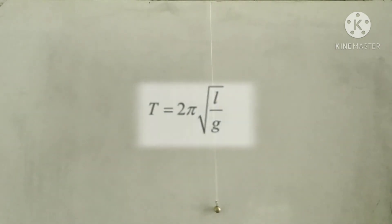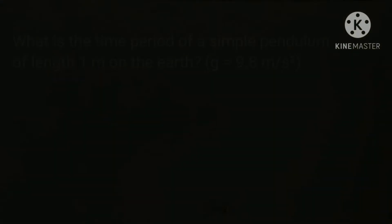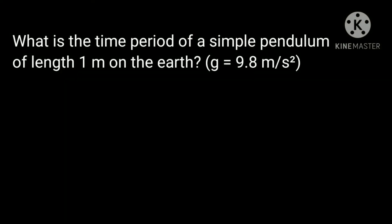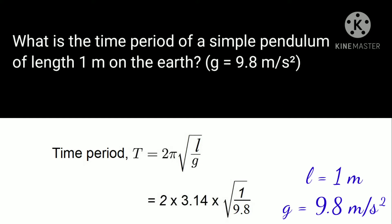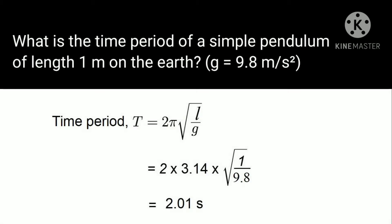Now let us go for a numerical problem. What is the time period of a simple pendulum of length 1 meter on the earth? Time period T is equal to 2π square root of l by g. Substituting the given values we get T is equal to 2 times 3.14 times square root of 1 by 9.8, that comes to be 2.01 seconds which is approximately equal to 2 seconds.